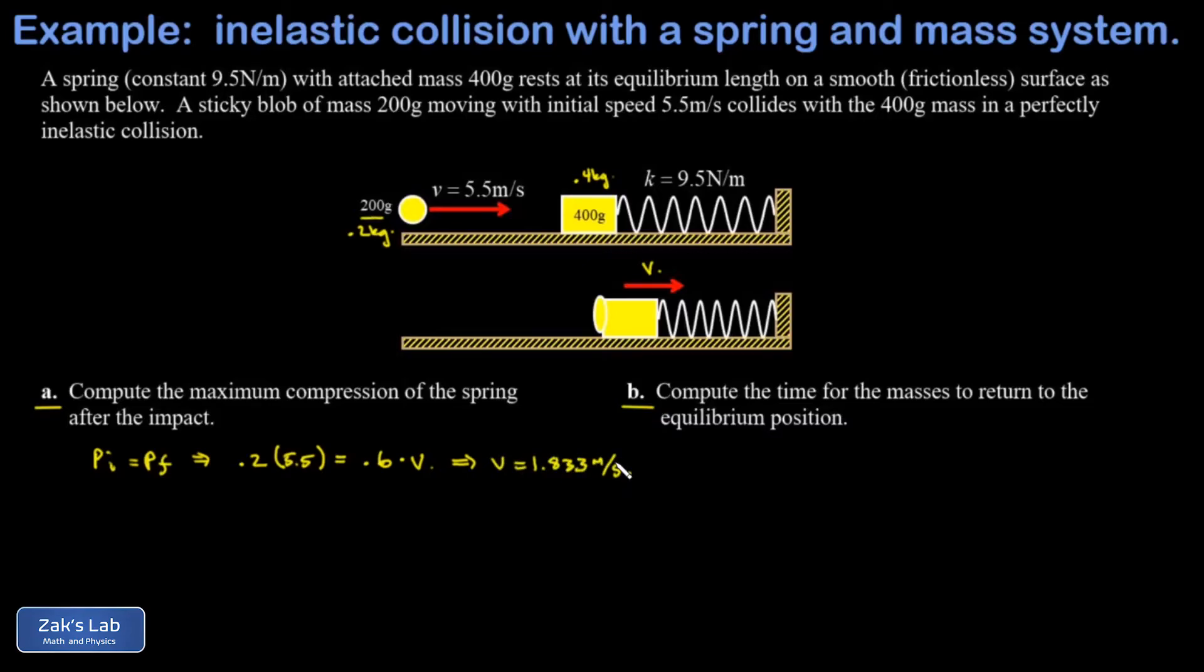And then to get to the maximum compression of the spring, well that's the moment where all the energy is in the compression of the spring and the mass is motionless. So it's an energy conservation problem where in the initial state I'm at the equilibrium position with no spring potential energy and it's all kinetic. So I'm going to have one half times the combined masses, I'll just call that little m, times the speed at that moment squared. All the energy is kinetic.